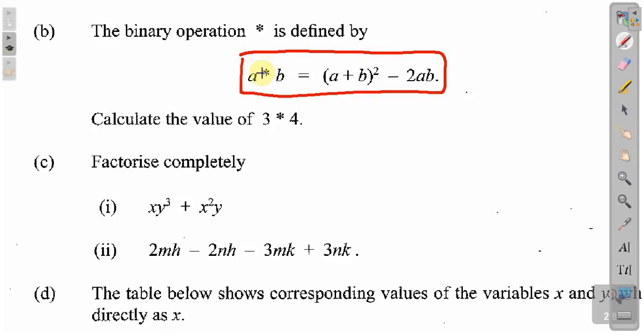This a asterisk b equals a plus b square minus 2ab. Okay, this is what this means. This a asterisk b means this. So you have to follow that rule. This is the rule here. And a will carry the value of 3 and b will carry the value of 4.